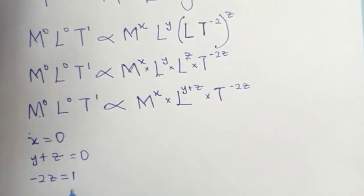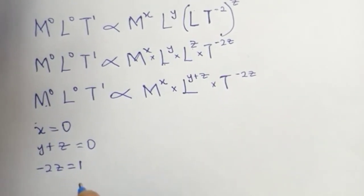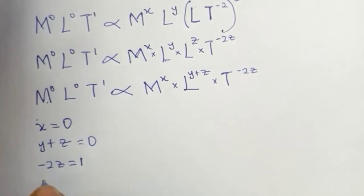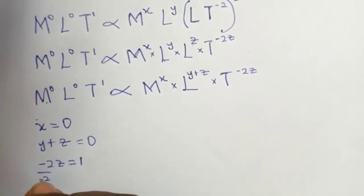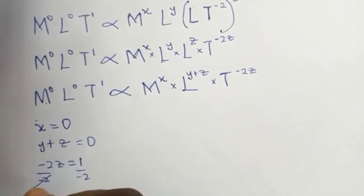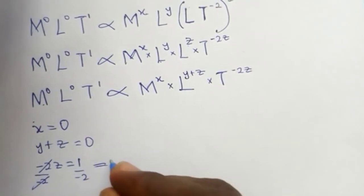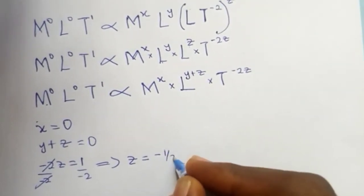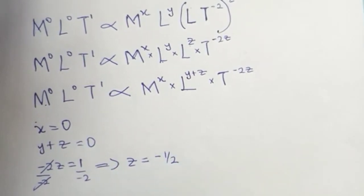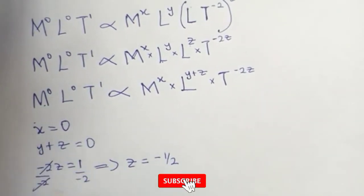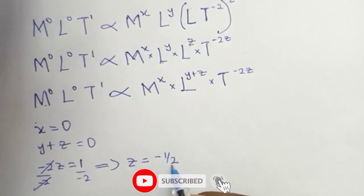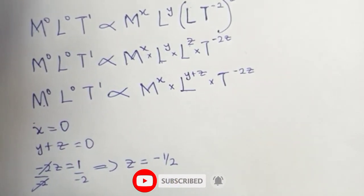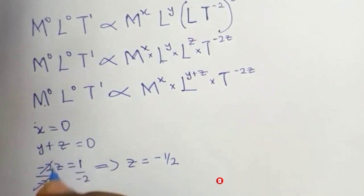Looking at this algebraic equation, you can actually get z. By dividing both sides by minus 2, this comes to this and our z becomes negative 1 over 2, minus 1 over 2.